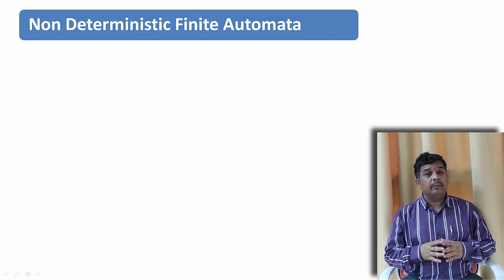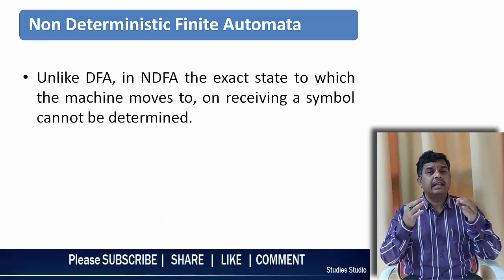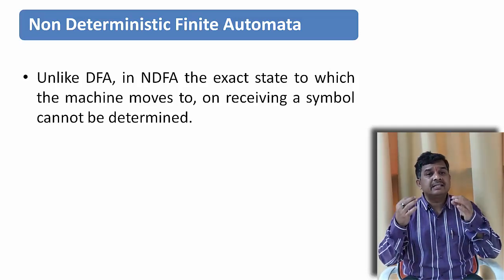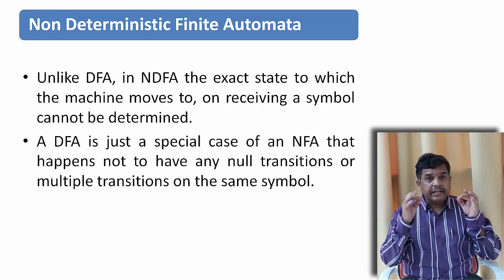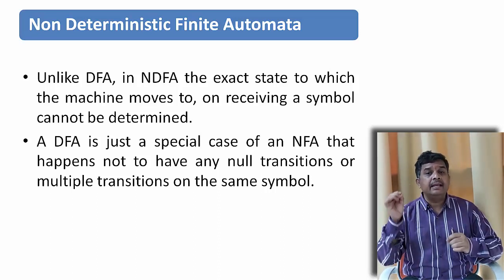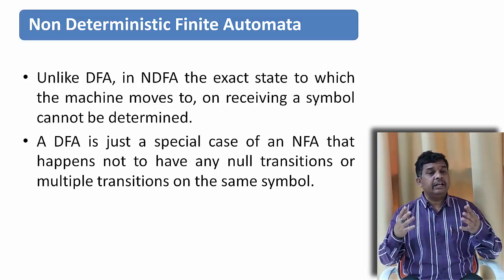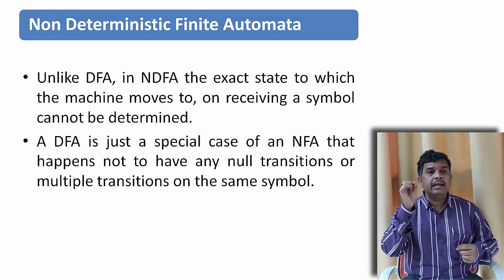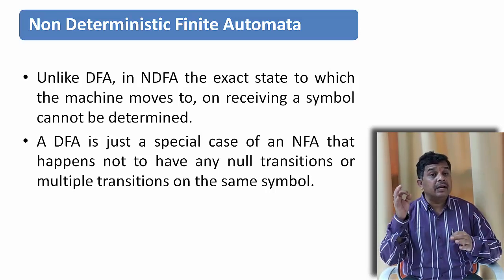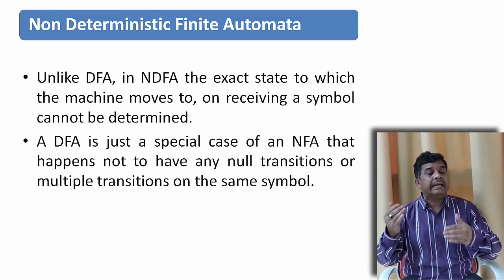Unlike a Deterministic Finite Automata, NDFA or Non-Deterministic Finite Automata, in some books they write NFA. The exact state to which the machine moves to on receiving a symbol cannot be determined. A DFA is just a special case of NFA that happens not to have any null transition or multiple transition on the same input symbol. In DFA, we always say that you need an input symbol to have a transition. But in NFA, we can use null transitions, means without giving anything from the input symbol and make a transition.